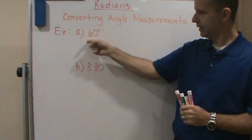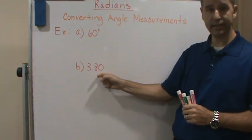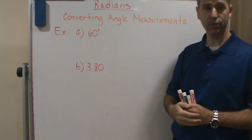So we see the degree symbol, it's degrees. We don't see any symbols, we don't see any units, it's understood to be radians.